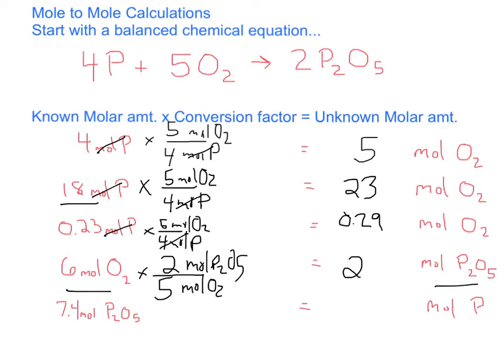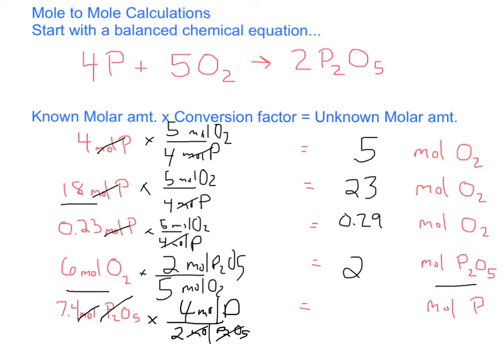Last one. We have 7.4 moles of P2O5, and the question is asking how many moles of phosphorus do you need to make that much. In any kind of chemical process, if you're trying to get to a certain end point, you have to be able to calculate backwards to the starting point. It'll be 2 moles of P2O5 at the bottom and 4 moles of phosphorus on top. Divide by 2 times 4 is 14.8, which becomes 15 moles of phosphorus with sig figs. That's a mole-to-mole conversion right there.